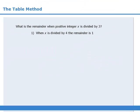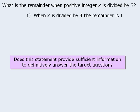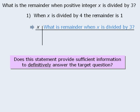Let's try another example. In this question, we must determine the remainder when x is divided by 3. Statement 1 tells us that when x is divided by 4, the remainder is 1. Does this statement provide sufficient information to answer the target question? Once again, we'll use a table to organize our results. We'll choose some values for x that satisfy the condition in statement 1 — that when x is divided by 4, the remainder is 1 — and then ask our target question: what is the remainder when x is divided by 3?